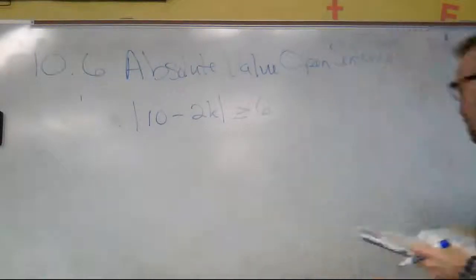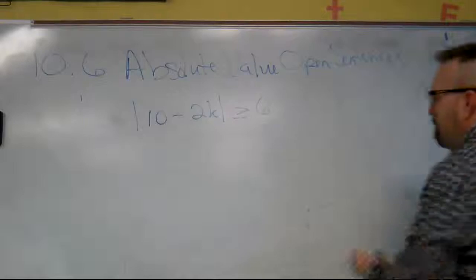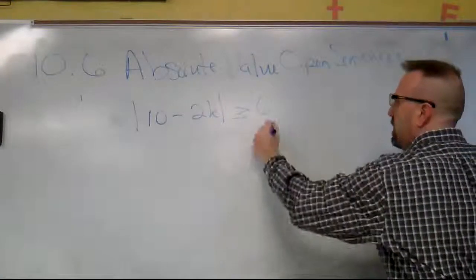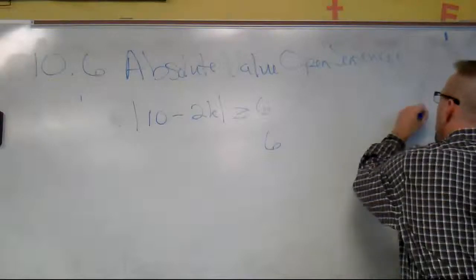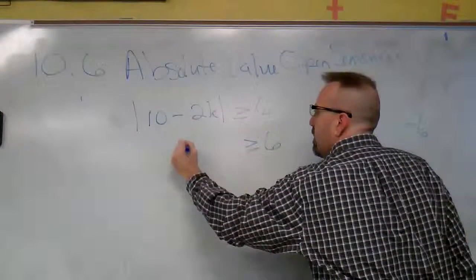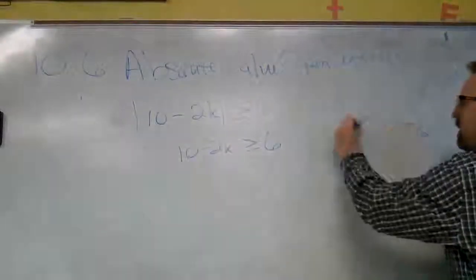So absolute value of 10 minus 2k, greater than or equal to 6. Same thing here: we know 6 is six units away. We also know that negative 6 is six units away. When you leave it as the positive, everything comes down exactly the same.